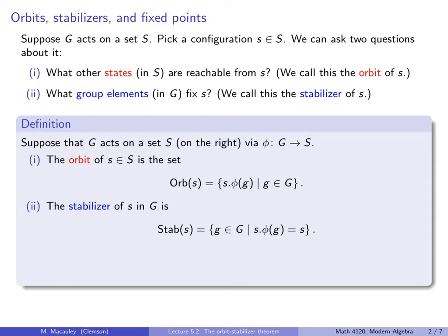The Stabilizer of little s in the group is written as Stab(s). It's the set of all group elements little g such that s dot phi(g) equals s. You can think of it as all group elements that, when you press the g button — think of a group action as a group switchboard where every element has a button — fix s.